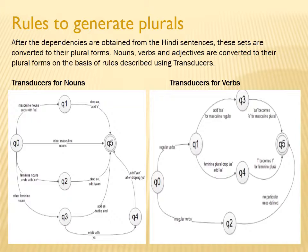For these conversions, we are using transducers for nouns, verbs, as well as adjectives. For example, if we are at a state q-naught and we are having a masculine noun ending with 'a,' for example, ladka. Ladka here ends with 'a.'